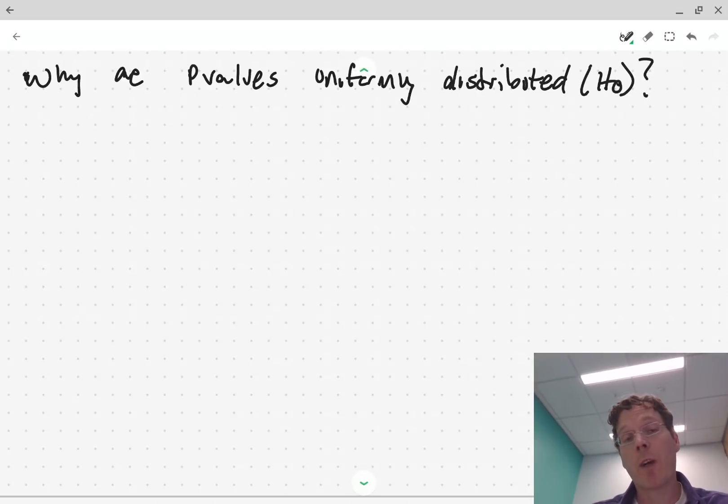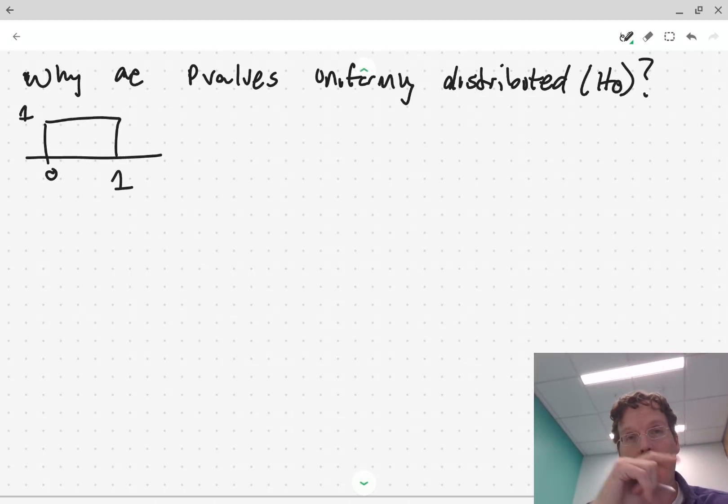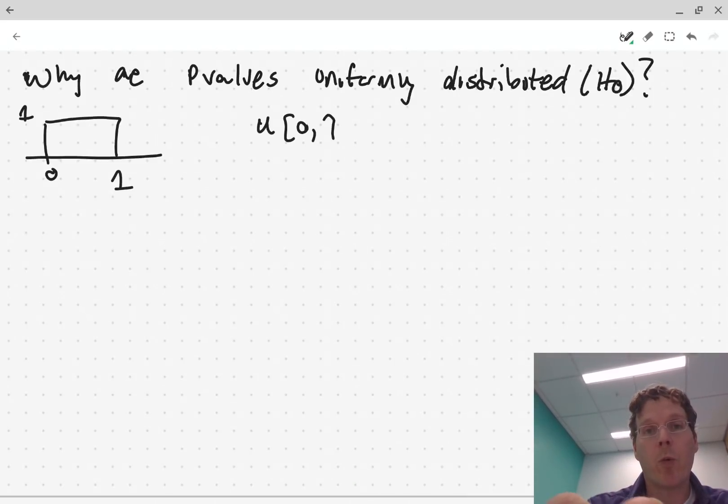Okay, so let's talk about some facts about the uniform density. So uniform density looks like this. Here's 0, here's 1, there's a height of 1. So if a random variable follows that distribution, it's called uniformly distributed, and we might write uniform 0, 1 to just indicate that it's uniform on the range 0 to 1. We could have it be a flat line on other ranges too.